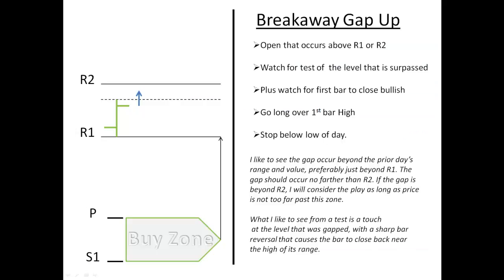I mentioned before that you want to make sure that whichever trend you're in — if you're in an uptrend you want to make sure that price opens above S1; if you're in a downtrend, you want to make sure that the open is below R1. So what happens if that is not the case? Sometimes it can happen even within an established trend. So let's say that you are in an uptrend and you are expecting your target to be R1, but you're gapping above R1. How do you play this?